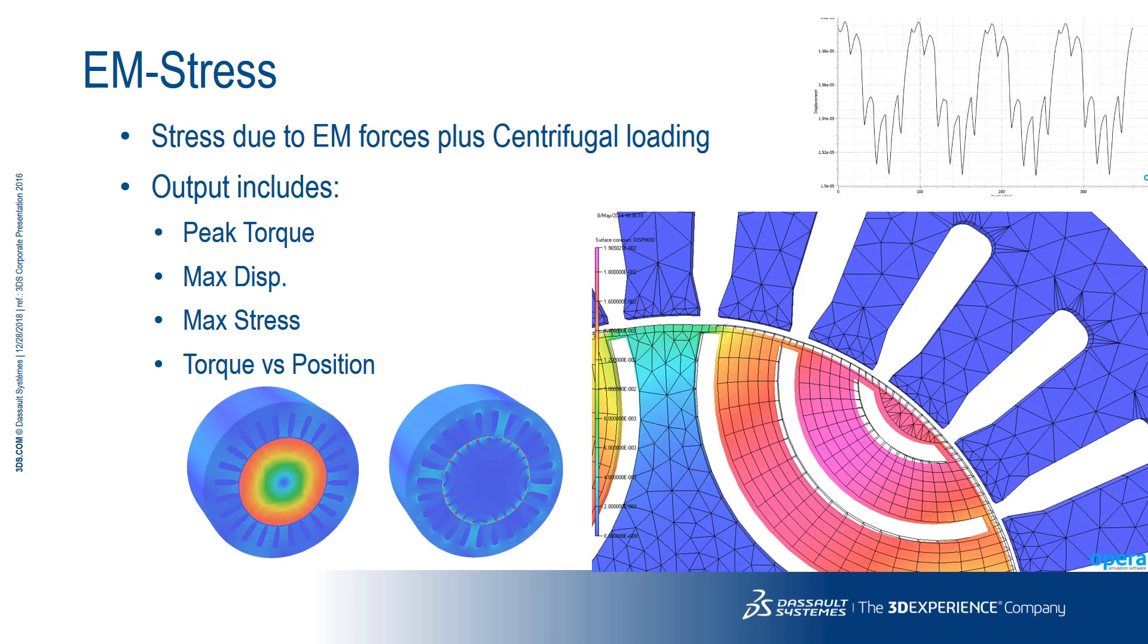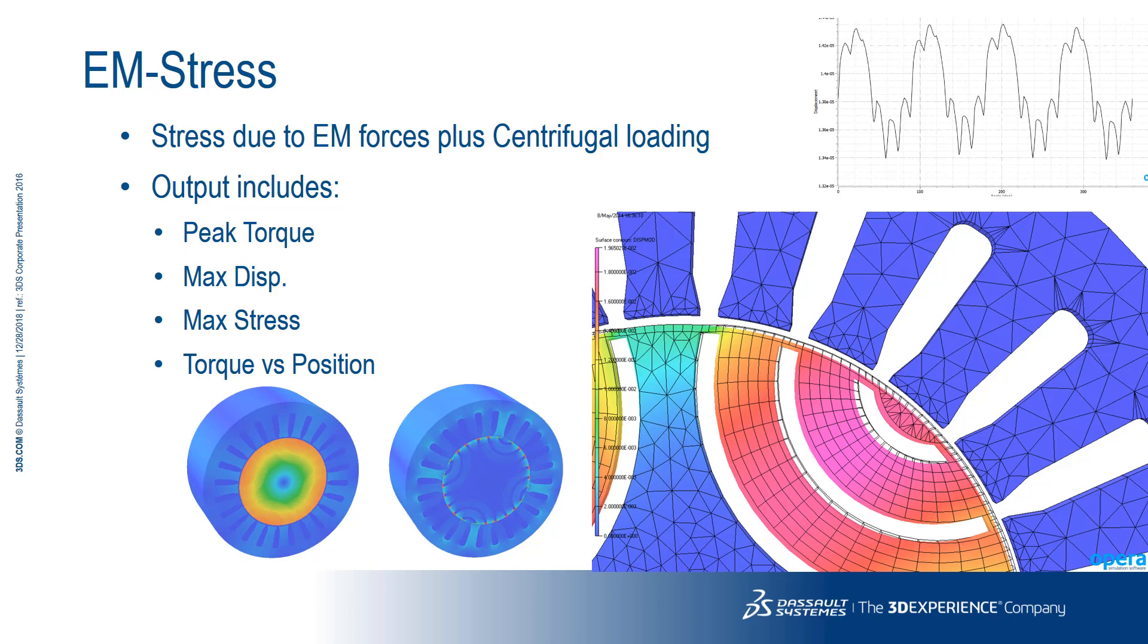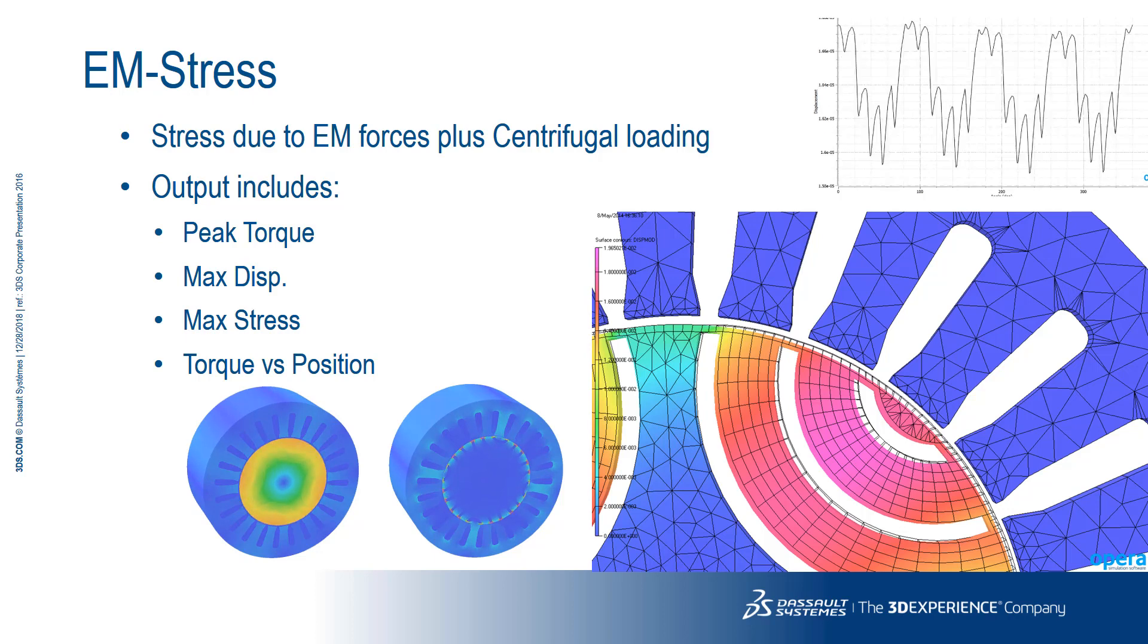The electromagnetic stress analysis creates a series of static jobs for different rotor positions, with a stress stage added to each of these jobs. The output includes the value of peak torque, its mechanical angular position, maximum displacement, maximum von Mises stress, and the torque versus position curve.